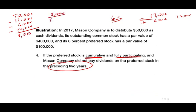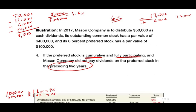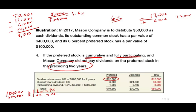We take the remaining $8,000 and divide it by $500,000 (common plus preferred), giving us a participating rate of 1.6%. So $100,000 times 1.6% = $1,600 to the preferred, and $400,000 times 1.6% = $6,400 to the common. The total for the preferred is $12,000 + $6,000 + $1,600 = $19,600. The total for the common is $24,000 + $6,400 = $30,400. Total distributed: $50,000.